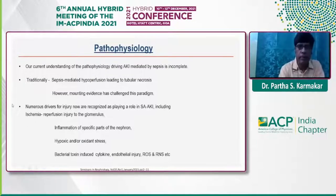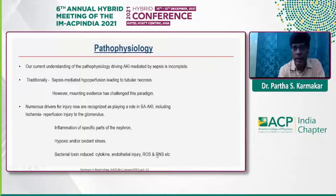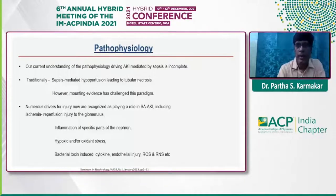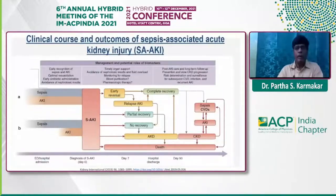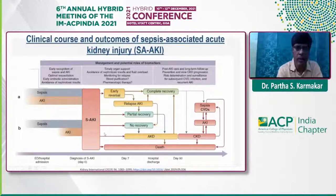Regarding pathophysiology of AKI development, various mechanisms include hypoperfusion, ischemia, hypoxic and oxidant states, bacterial toxin-induced cytokine release, epithelial injury, and reactive oxygen species — all of which can produce inflammation and injury to kidney tissue.